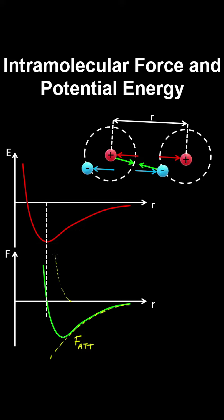And the repulsive force increases rapidly because the nuclei will also repel each other. And then superimposing the attractive and repulsive forces, you obtain this graph of the force.